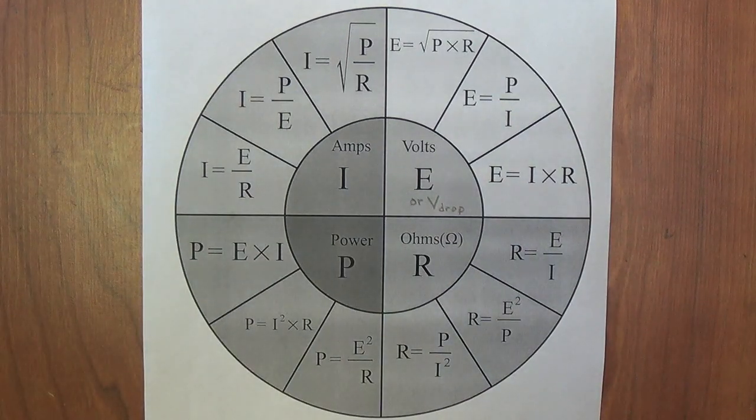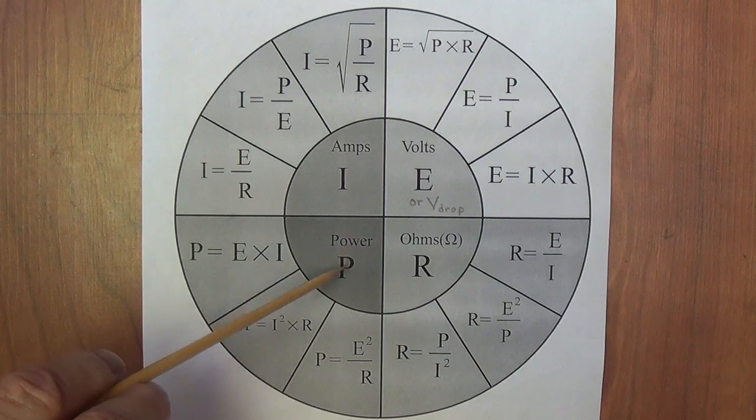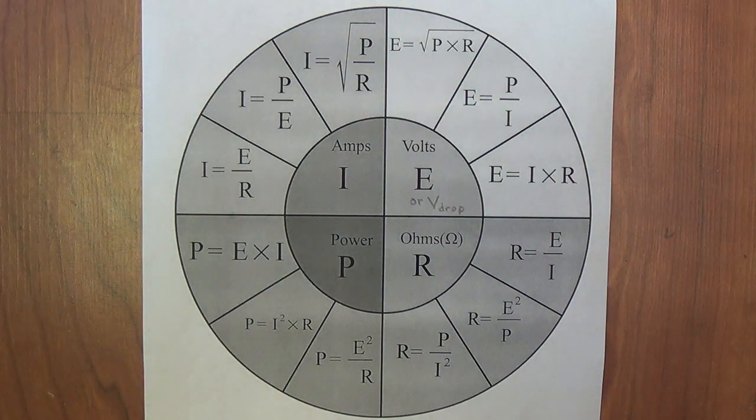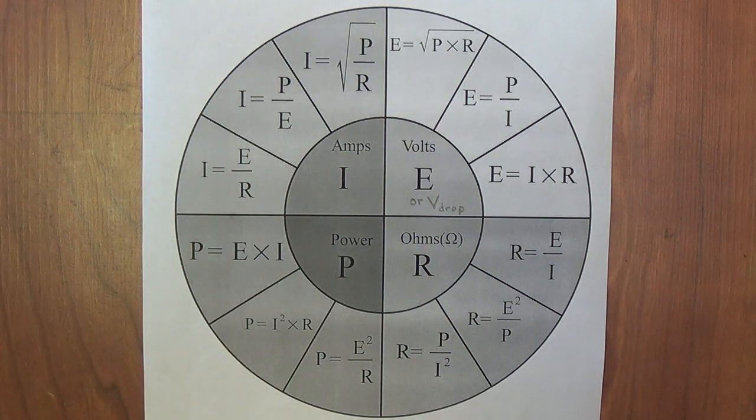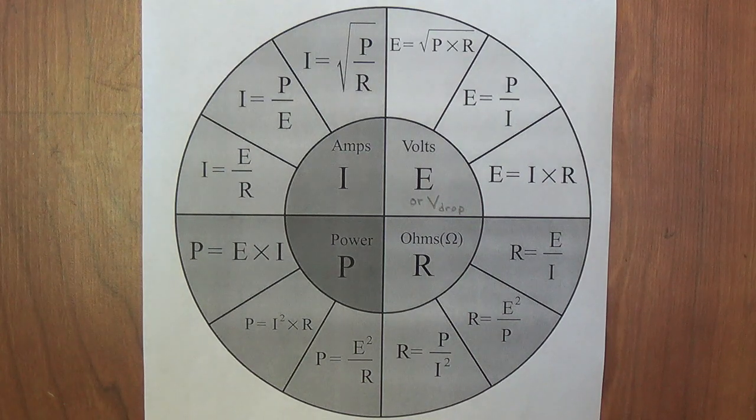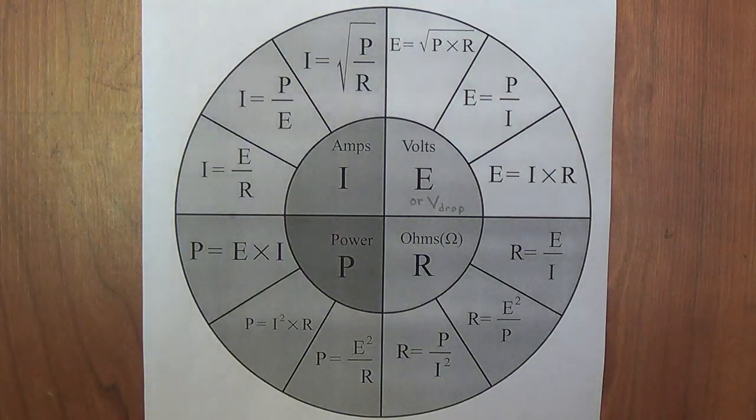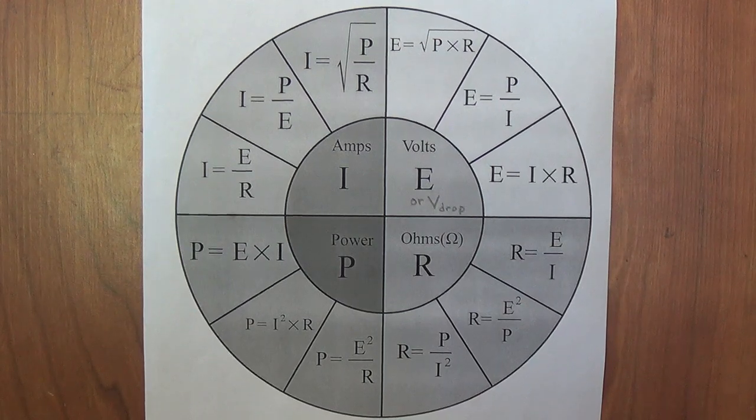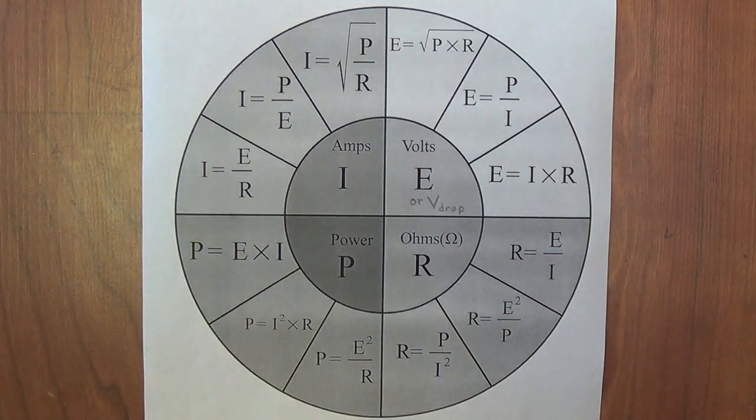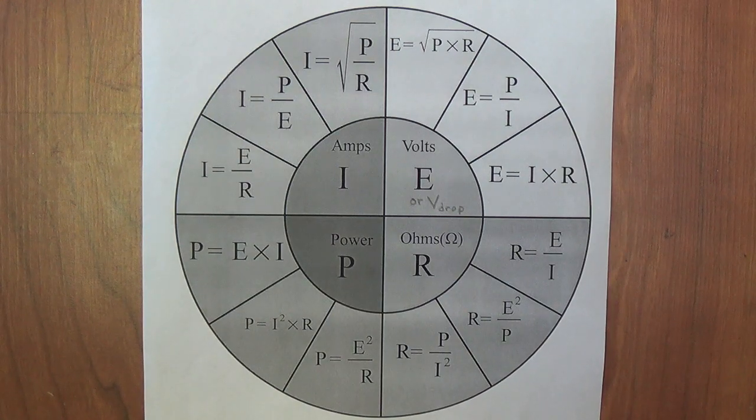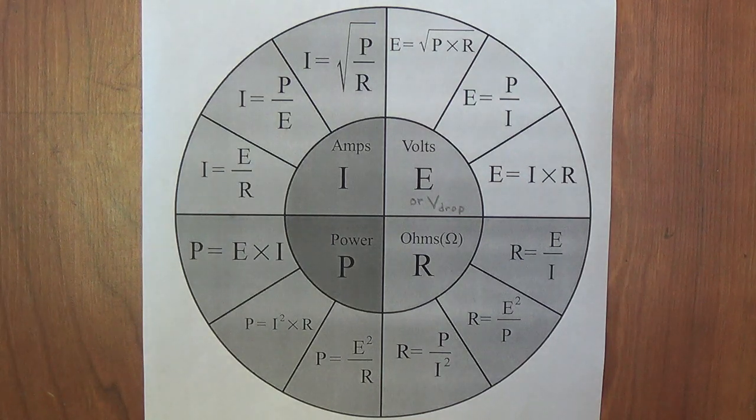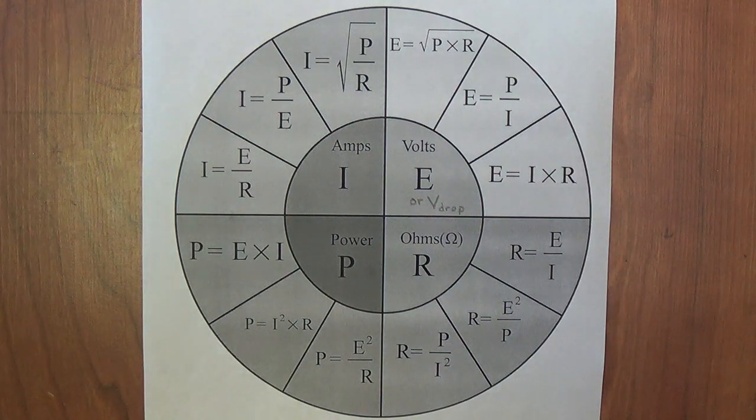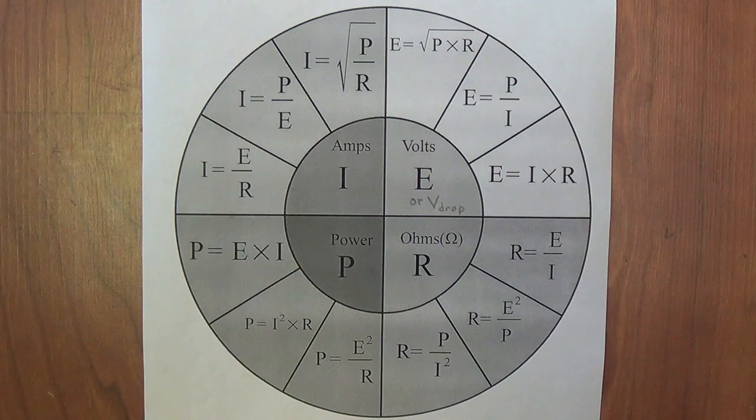Now, the one parameter that we have not yet discussed in Ohm's Law is power. Power is measured in watts. There are all sorts of fancy definitions or explanations of what power means. You can talk about joules, energy, and work, and other things that are so nebulous that most people don't comprehend them. Let's come up with a very simple idea of what power is. Power occurs when energy is converted into another form.